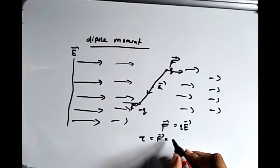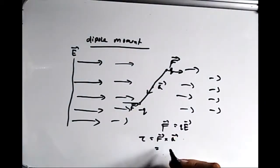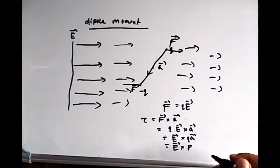Now the torque is given by tau equal to F cross R, which equals Q E cross R, which equals E cross Q R, which equals E cross P, where P is equal to Q R.